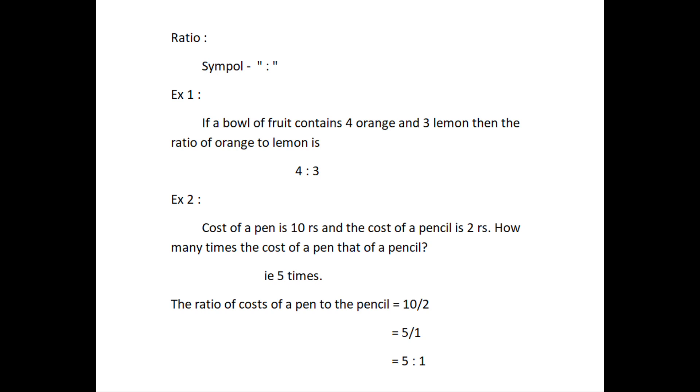Consider another example. Cost of a pen is 10 rupees and the cost of the pencil is 2 rupees. How many times the cost of the pen that of a pencil? We know it is obviously 5 times. The ratio of the cost of a pen to the cost of the pencil equals 10 divided by 2 which equals 5 divided by 1 which equals 5 is to 1.